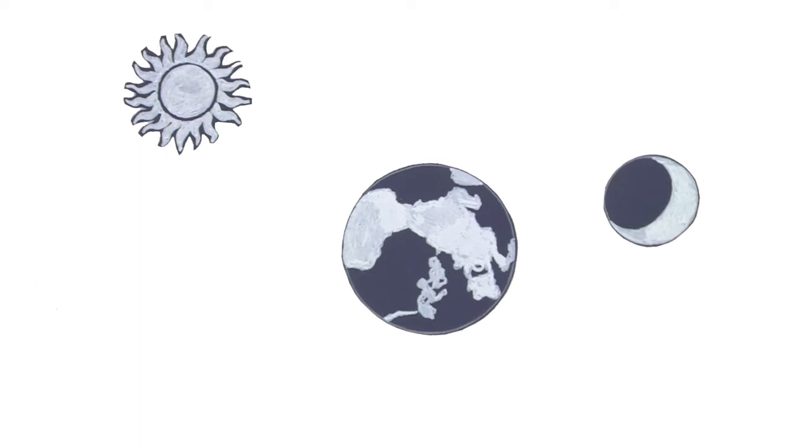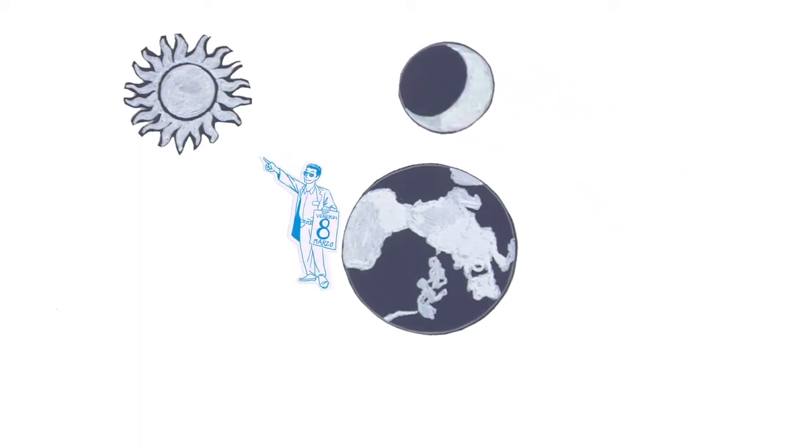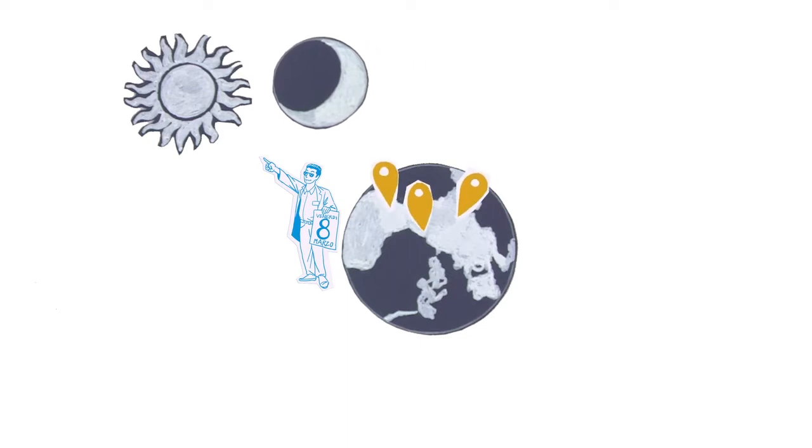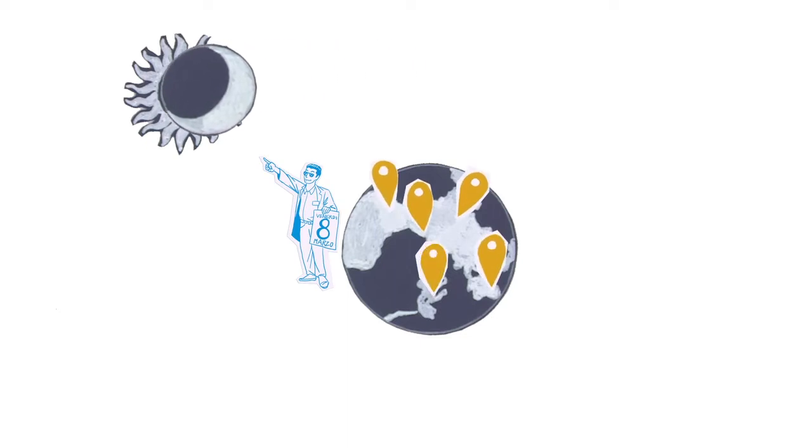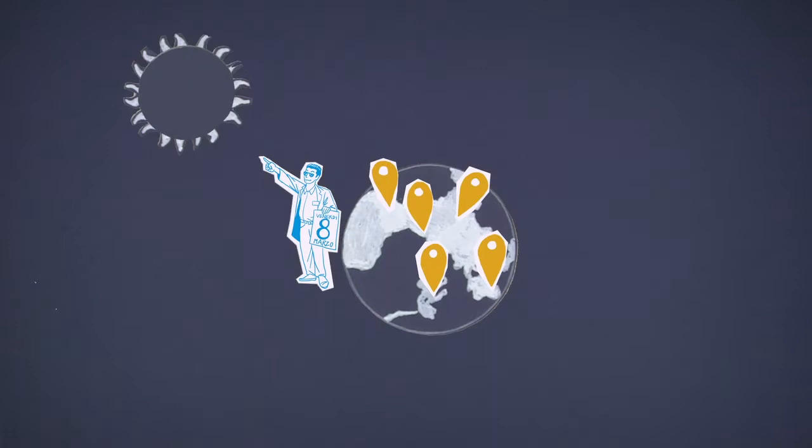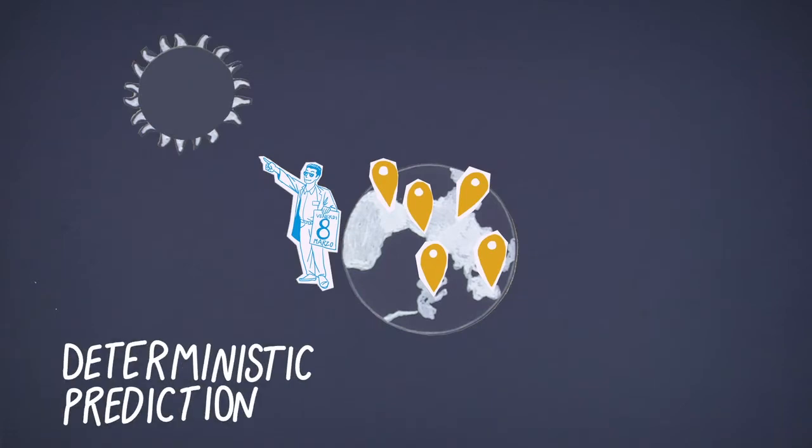A solar eclipse, for example, is a well-known phenomenon that is predictable. Astronomers can tell us exactly where and when it will be possible to observe the next one. This is what we call a deterministic prediction.